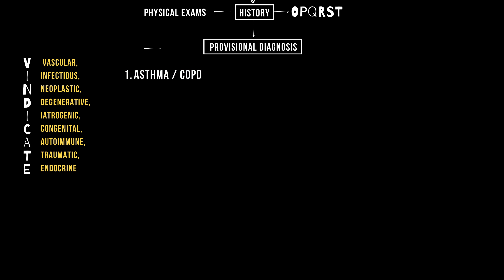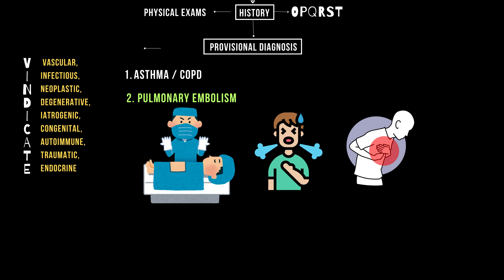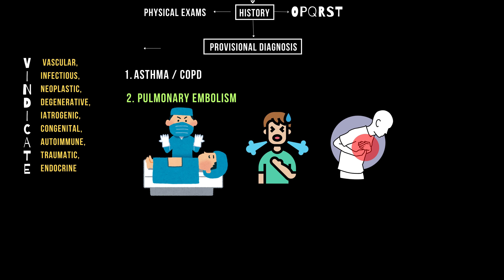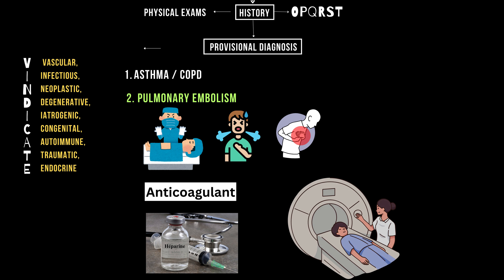Next, pulmonary embolism. If the patient has risk factors like recent surgery or immobility, consider this. Symptoms include sudden-onset dyspnea, chest pain, and hypoxia. Start anticoagulation with heparin, ensure the patient is stable, and prepare for advanced imaging like a CT pulmonary angiogram.